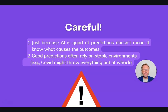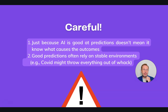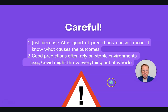Just because AI is good at predictions doesn't mean it knows what causes the outcomes. It's very easy to confuse predictive ability with causal understanding. Good predictions often rely on stable environments — for a few years you can make excellent predictions, and then something like COVID comes around, completely changes the global economy, and AI is not going to deal with that very well because it's no longer a stable environment.